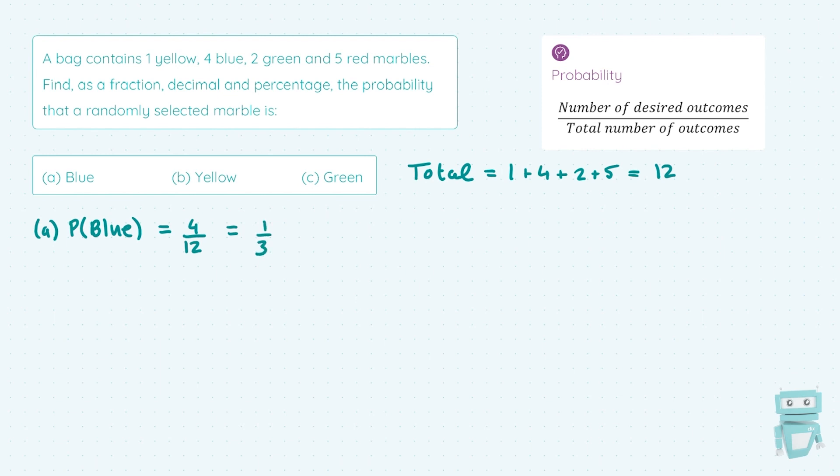Then I'll convert it into a decimal. So using the change button on your calculator, 1 over 3, change it. It is 0.3 recurring. So the dot on the 3. And then to turn this into a percentage, I'm simply going to times that exact number then by 100 to get 33.3 recurring percent. So my three answers here are first up, we have one third. Then we have 0.3 recurring. And then we have 33.3 percent.